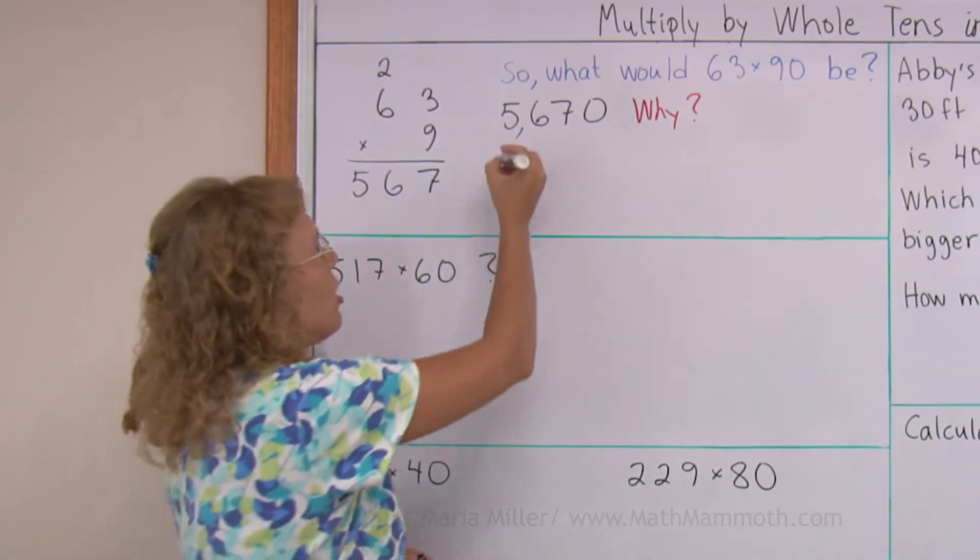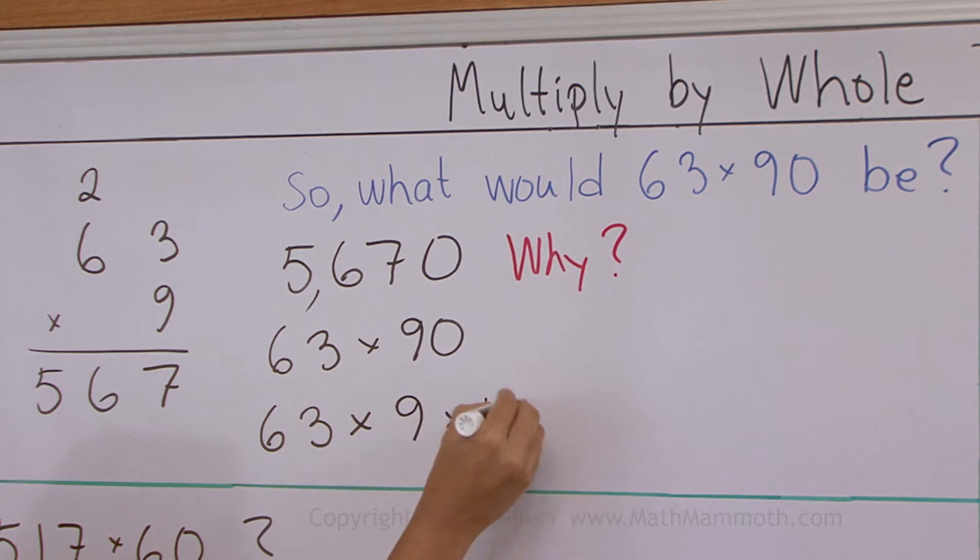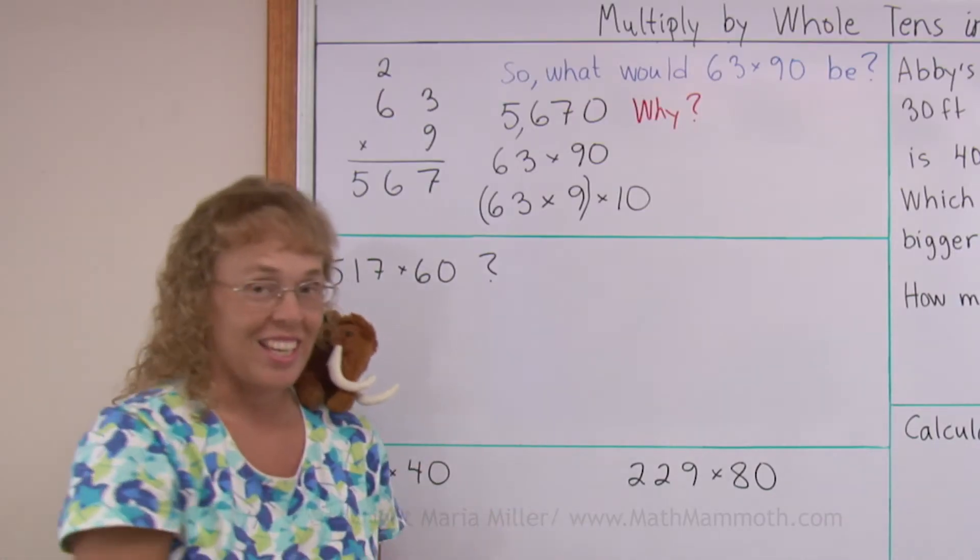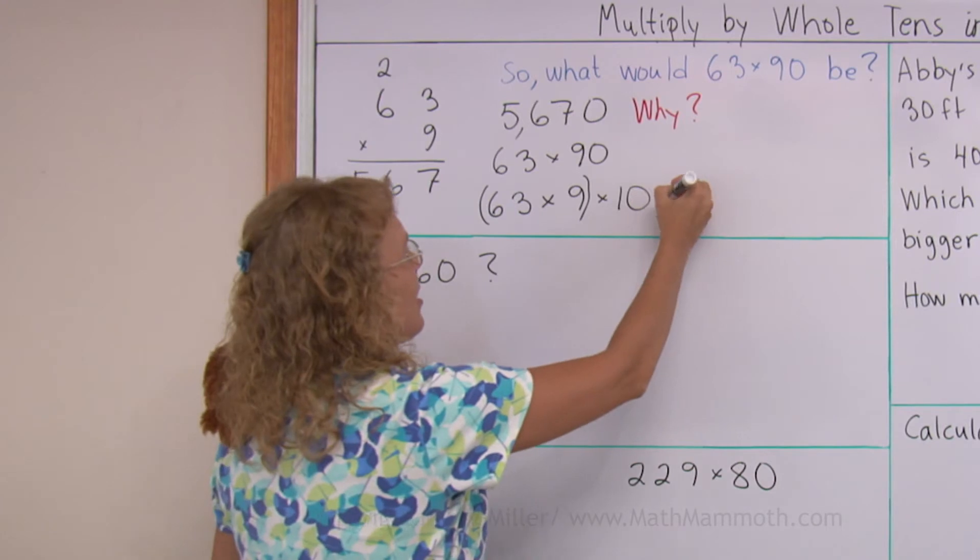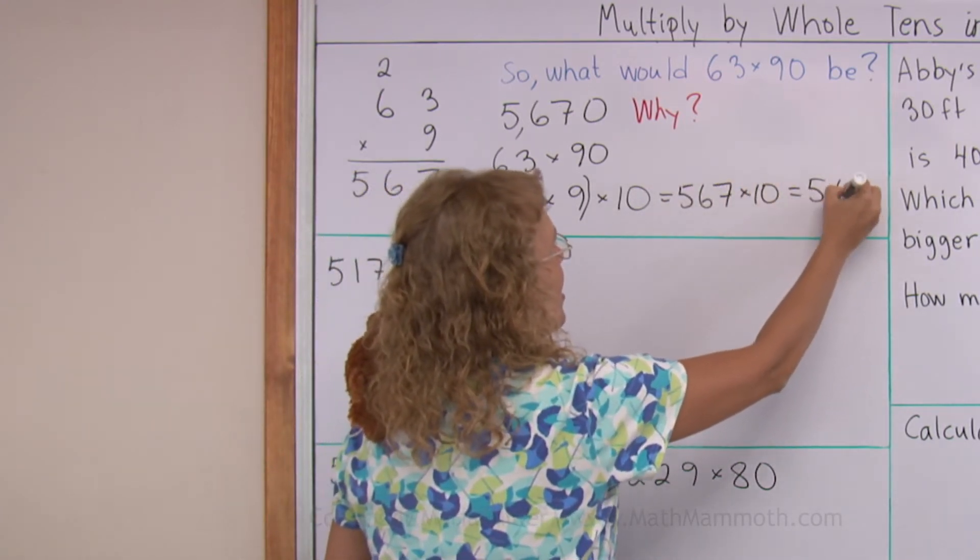It is because if I think of 63 times 90, this is the same as 63 times 9 times 10. 90 equals 9 times 10. And here I can first calculate this. And then take that result times 10. And times 10 means that you tag a zero in the end. So we get 567 times 10 equals 5670.